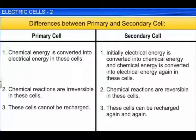The table here compares primary and secondary cells. In primary cells, chemical energy is converted into electrical energy. Whereas in secondary cells, electrical energy is converted into chemical energy, and then chemical energy is converted into electrical energy again. In primary cells, the chemical reactions are irreversible, whereas in secondary cells, they are reversible. Primary cells cannot be recharged, but secondary cells can be recharged and used again and again.